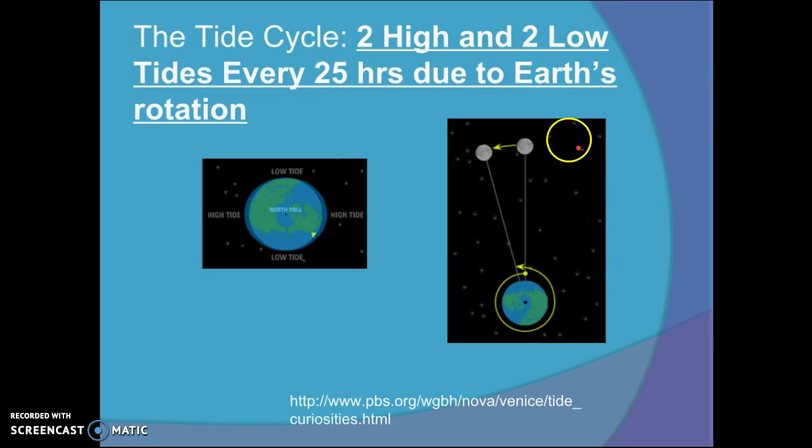The tide cycle. There are two high tides and two low tides every 25 hours. So about a day time cycle. And this is because of the Earth's rotation.